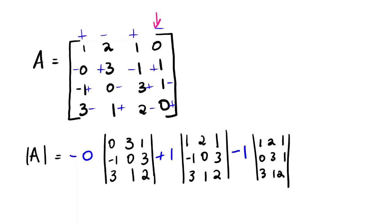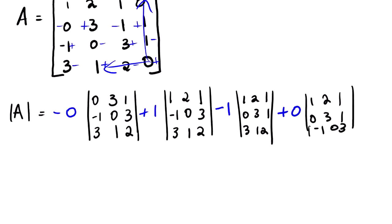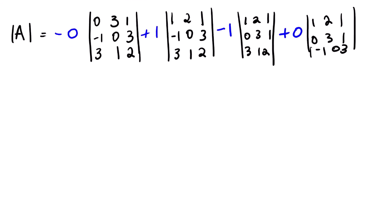The last element is positive 0. It affects its column and row, leaving the 3x3 matrix: 1, 2, 1, 0, 3, 1, negative 1, 0, 3. Since the first and last elements of the last column are zero, the first and last 3x3 determinants will yield zero.